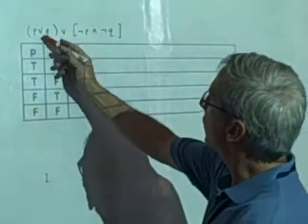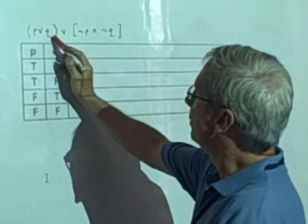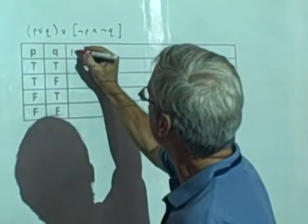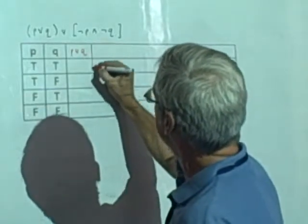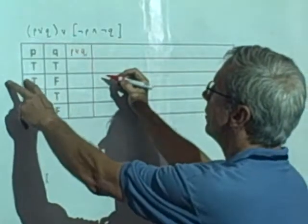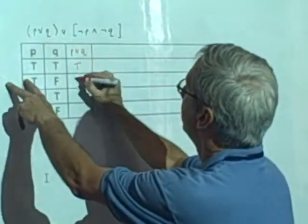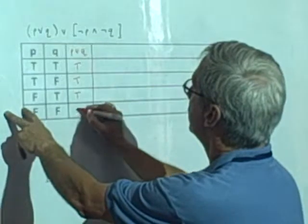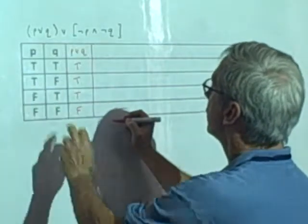All right, so this starts off with one compound statement, P or Q. We know that that one works. That one is the disjunction, and it's easy to make true. It's true anywhere either of them is true, and it's false only when they're both false. So far, so good.